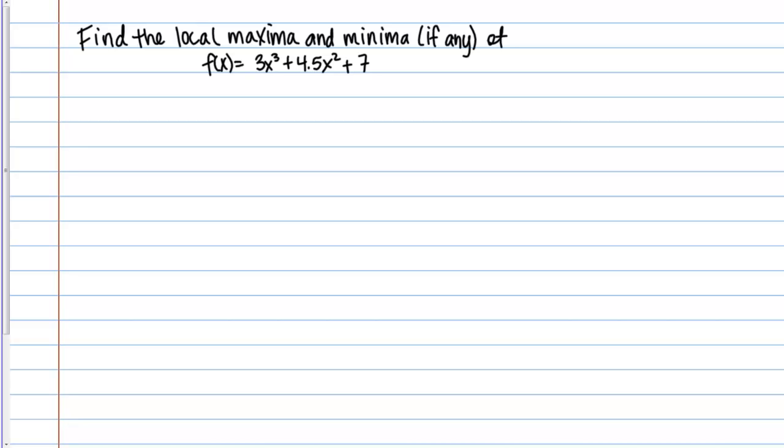In this video, we're going to practice finding the local extrema of a function. We want to see if this function has any local maximums or minimums, and if so, what those values are. Here's our function, and if you completed the guided example earlier in this lesson, you've already worked with this function a little bit. The function is f(x) = 3x³ + 4.5x² + 7.